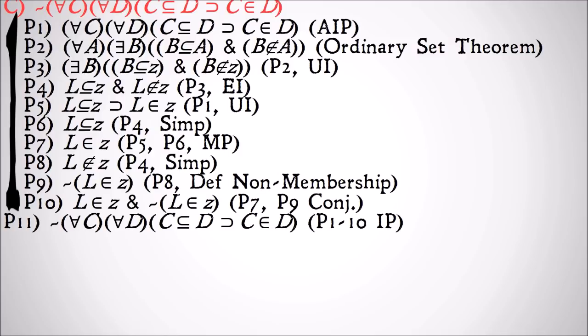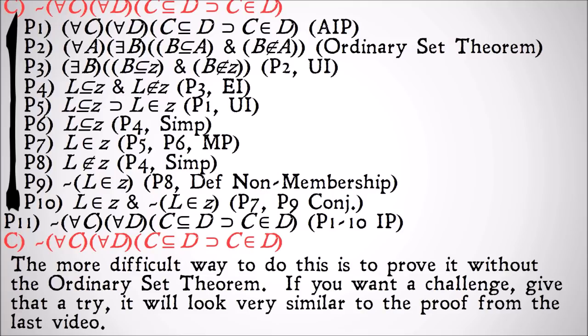One through 10 shows us that it's not the case that for all C and all D, C is a subclass of D implies that C is a member of D. That was what we were trying to prove. The more difficult way to prove this is without the ordinary set theorem and proving basically the ordinary set theorem on your own and then proving this. If you want a challenge, give it a try. It'll look very similar to the proof from the last video just with a little bit extra tacked on at the end.